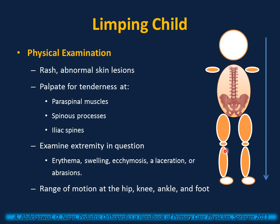Skin findings may suggest Lyme disease or leukemia — 20% of cases of leukemia may present with limping or bone pain. Palpate the back for tenderness, the paraspinal muscles and spinous processes. For any toddler refusing to walk or stand, always keep discitis or osteomyelitis of the spine in the differential. Palpate the iliac spines for tenderness. Examine the extremity in question for erythema, swelling, ecchymosis, lacerations, or abrasions. Assess range of motion at all levels — hip, knee, ankle, and foot. Take off the shoes and examine the foot.